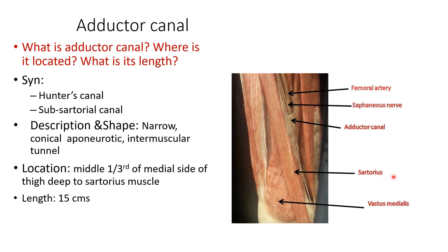What is adductor canal, where it is located, what is its length, and what is its extent? The adductor canal is also known as Hunter's canal, by the name of a surgeon who has performed surgeries in this canal. It is also known as subsartorial canal because it is adjacent to the sartorius muscle.